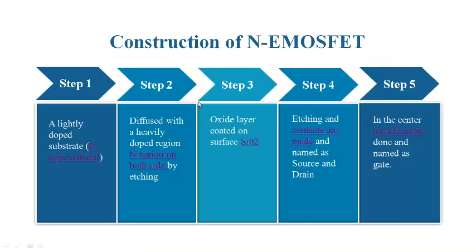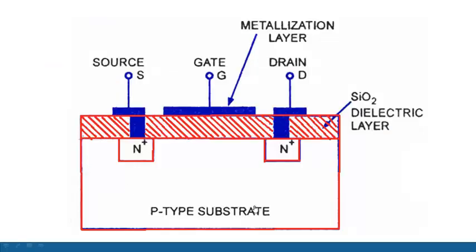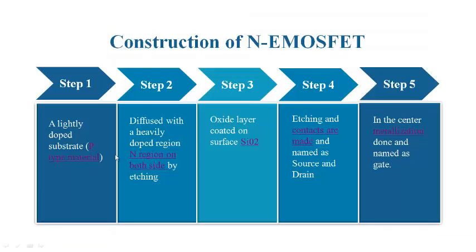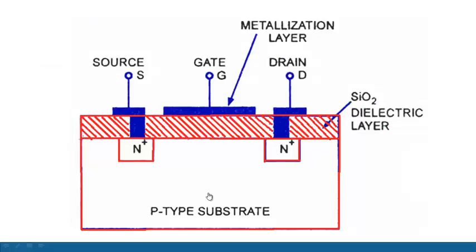For construction of the n-channel enhancement MOSFET, first you take a p-type material as substrate. This p-type semiconductor is lightly doped. Doping is nothing but adding external impurities to your pure semiconductor to make it a conducting material — only by adding impurities do semiconductors behave like a conductor. Pure semiconductors are insulators. The amount of impurity added is less in this p-region.